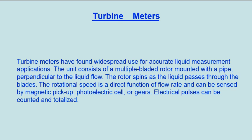Turbine meters have found widespread use for accurate liquid measurement applications. The unit consists of a multiple-bladed rotor mounted within a pipe, perpendicular to the liquid flow. The rotor spins as the liquid passes through the blades.